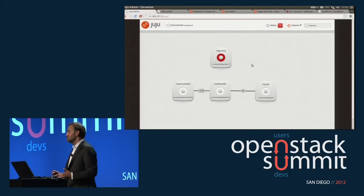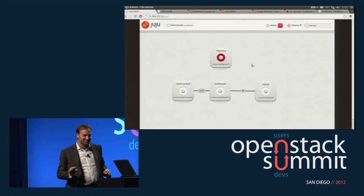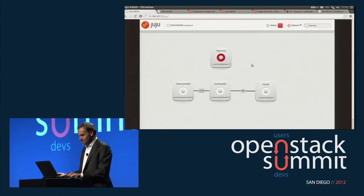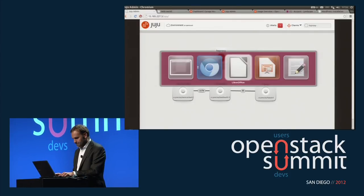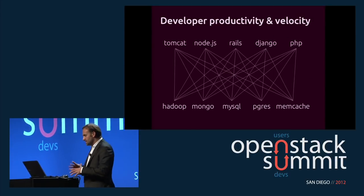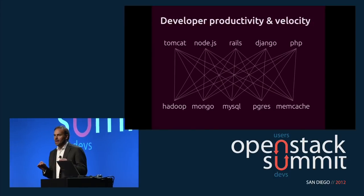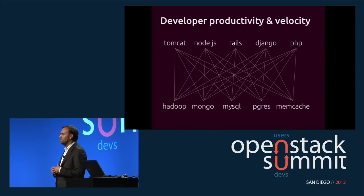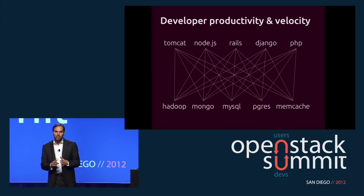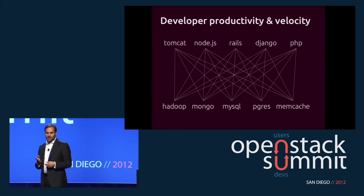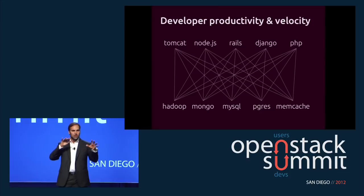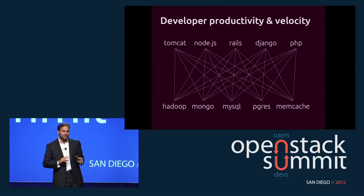I think that's pretty awesome and maybe worth a round of applause. In the last six months, the focus in this world has really been on developers and the frameworks they use every day — Tomcat, Node, Grails, Django, PHP — and the top data stores. The idea with Juju is to be able to pick any combination of those things that you like.